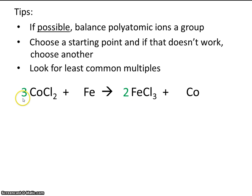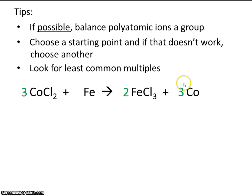By placing this three here, we made six chlorines, but we also made three cobalts, which means we'll need three cobalts on the right. And by placing a two here, we also made two irons. So now we need two irons on the left. So now this equation is balanced, and it obeys the law of conservation of mass.